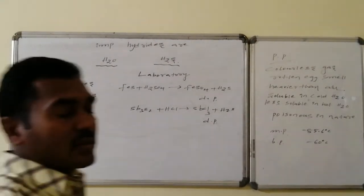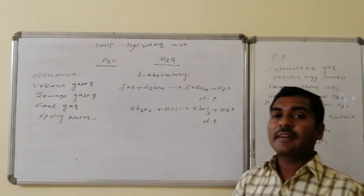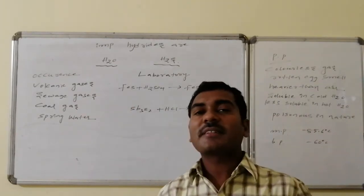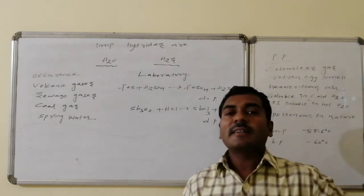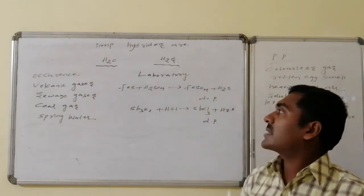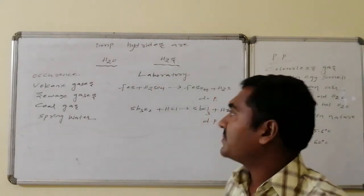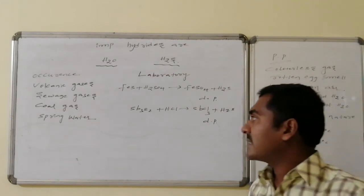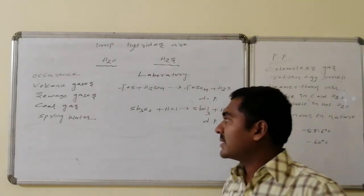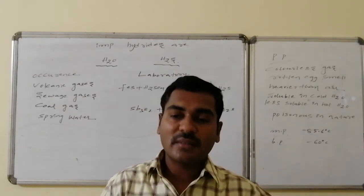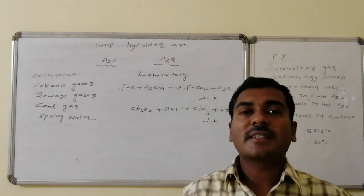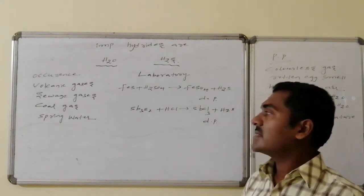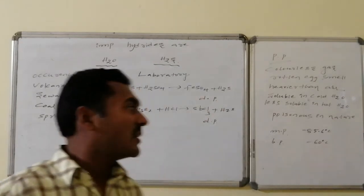The important hydrides of Group 6A elements are the oxygen hydride (water) and the sulfur hydride (hydrogen sulfide, H₂S). Water is a special case discussed separately. Hydrogen sulfide occurs naturally in volcanic gases, sewage gas, coal mines, and in traces in spring water.